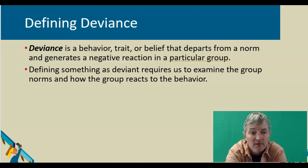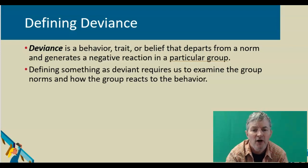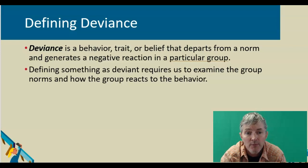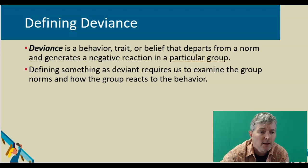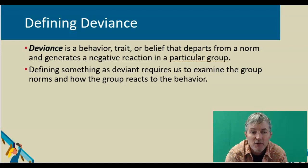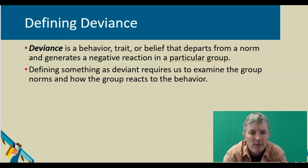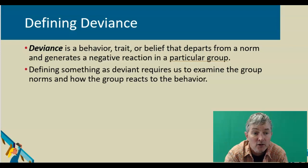Whether or not something is considered deviant is somewhat contingent on the time period — it changes over time. For example, George Washington and Thomas Jefferson both farmed cannabis during a time in which doing so was not deviant. Then we went through a long period of our country's history where growing cannabis was deviant. And now we're entering into a new period where growing cannabis isn't. Every state had made the use of marijuana illegal by 1937, and marijuana is associated with criminal behavior throughout most of our history, especially in the 20th century and into the 21st century. Farming of hemp and the increasing legality of recreational use of marijuana shows that deviance is changing once again.